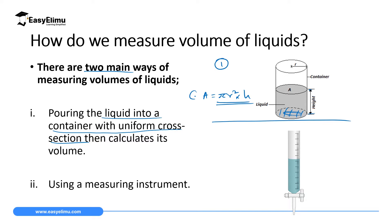The second method is using a measuring instrument. We have measuring instruments that can measure the volume of liquids precisely. A good example is the burette, which you can see on the screen. We are going to see how a burette can be used to measure volume later.